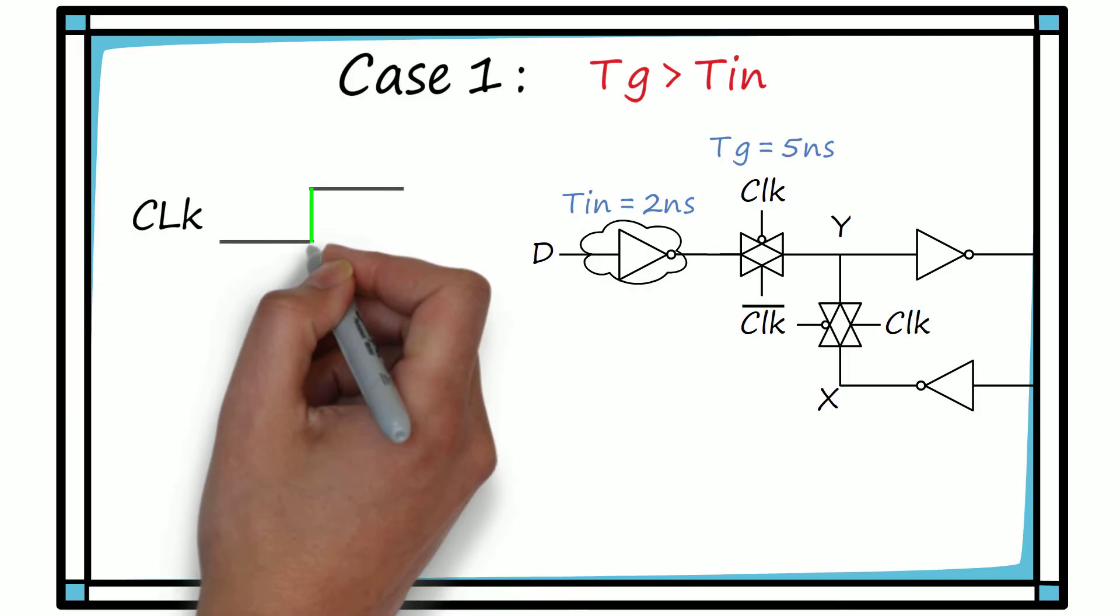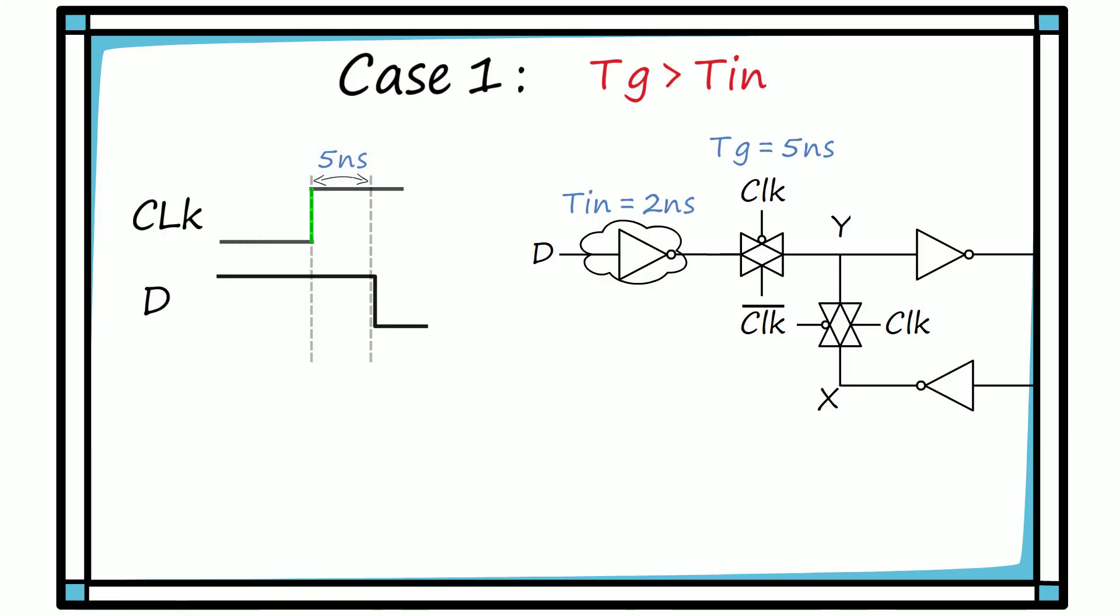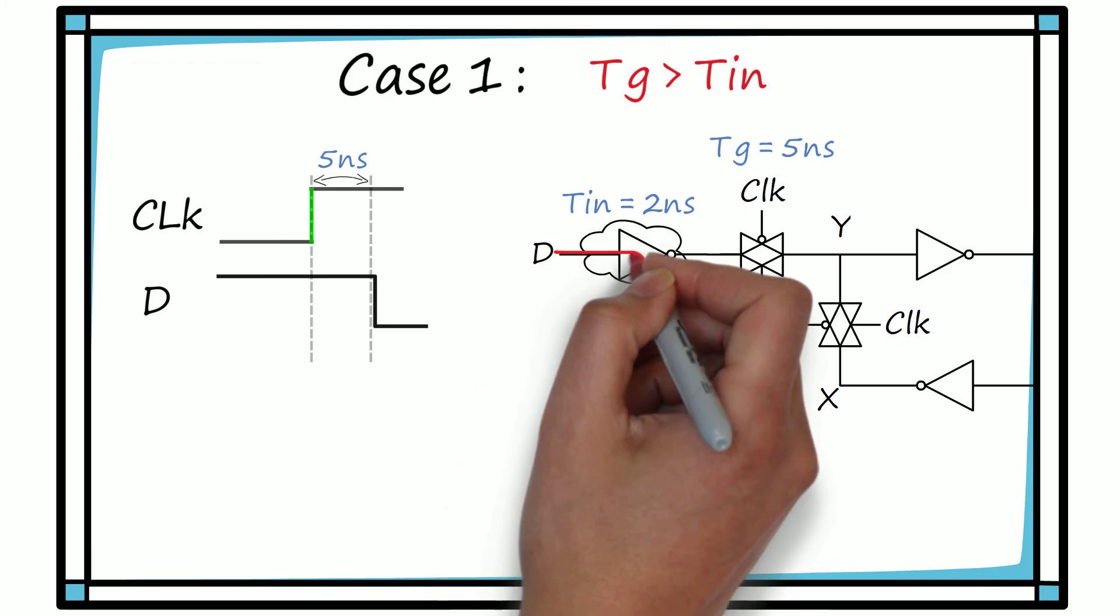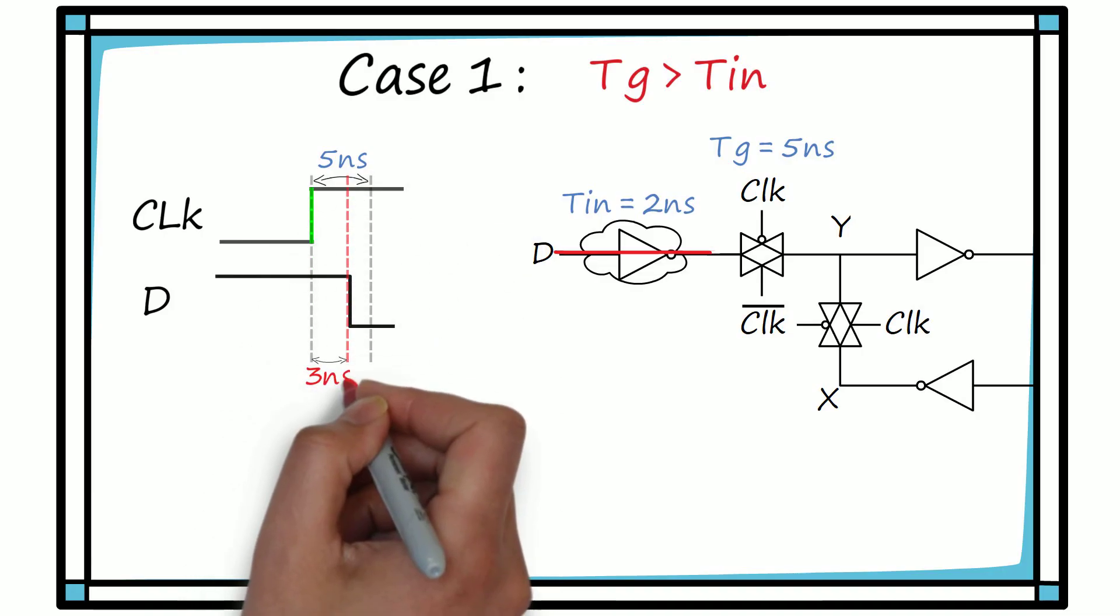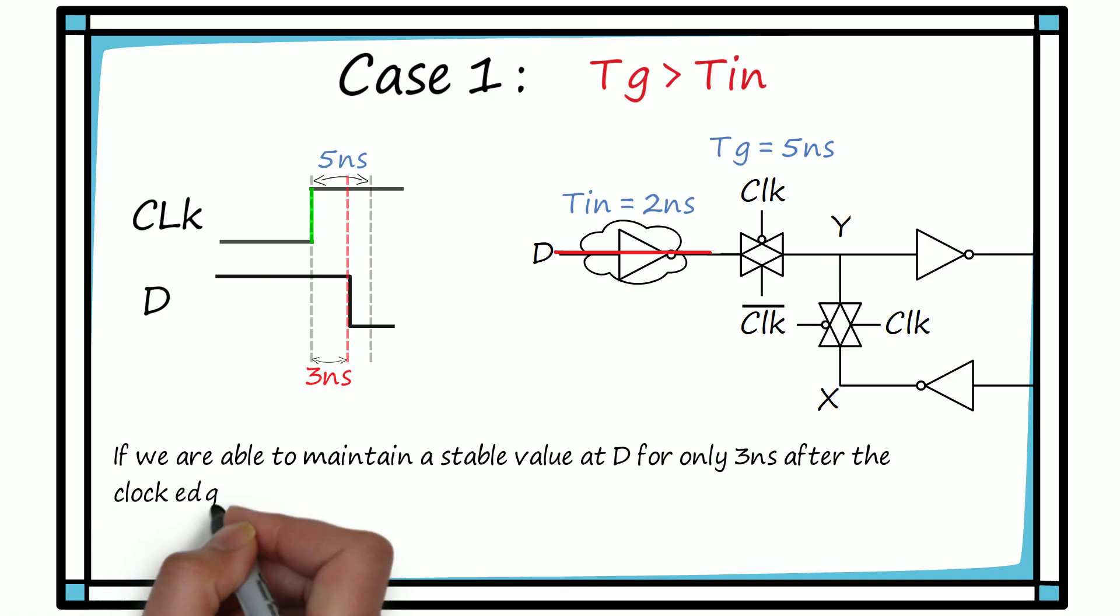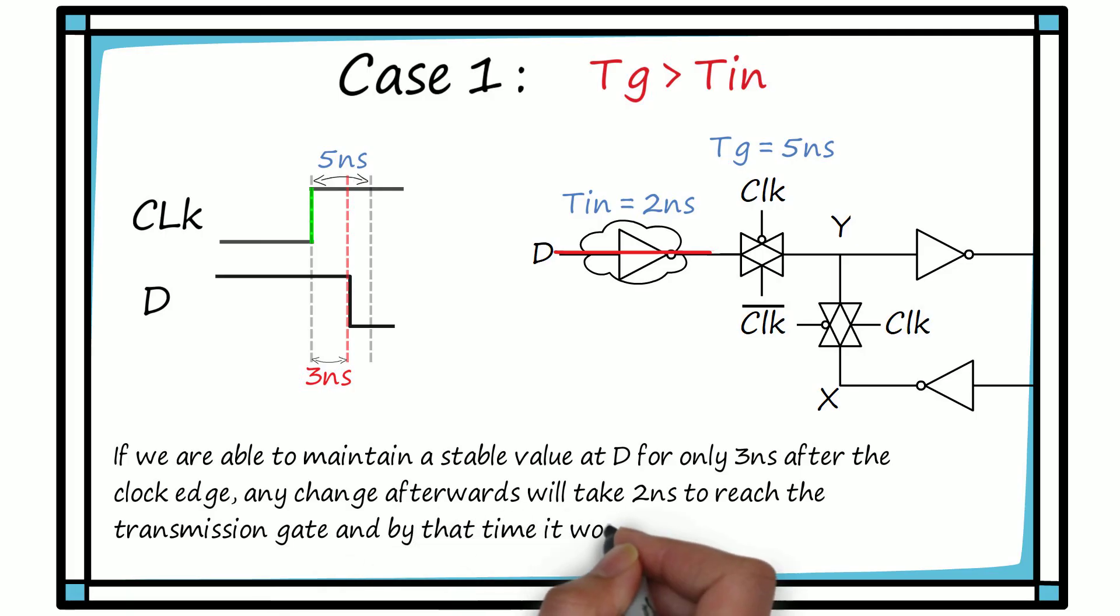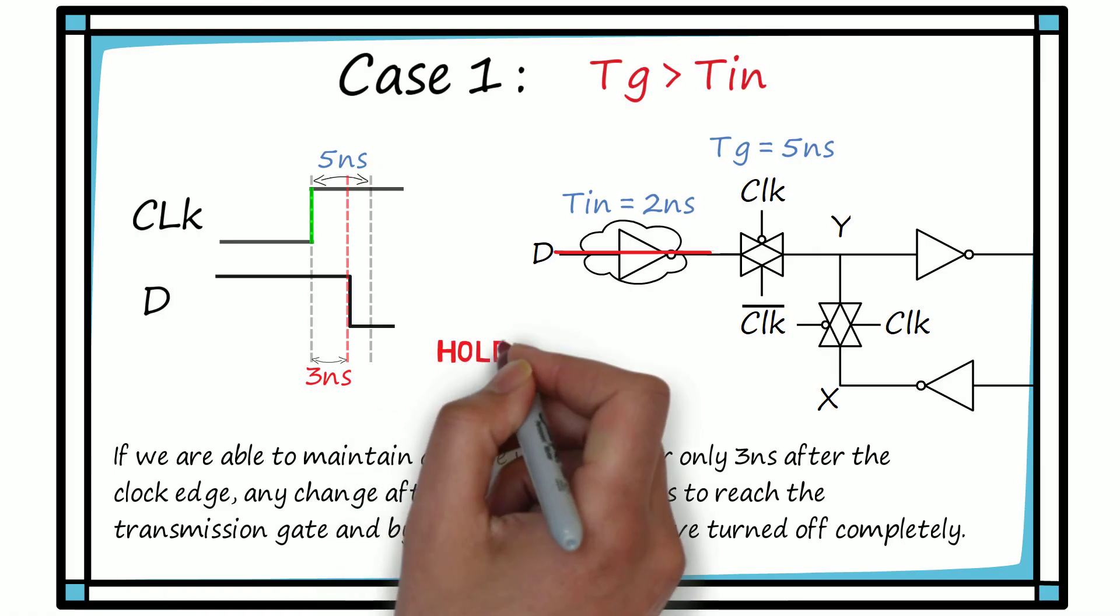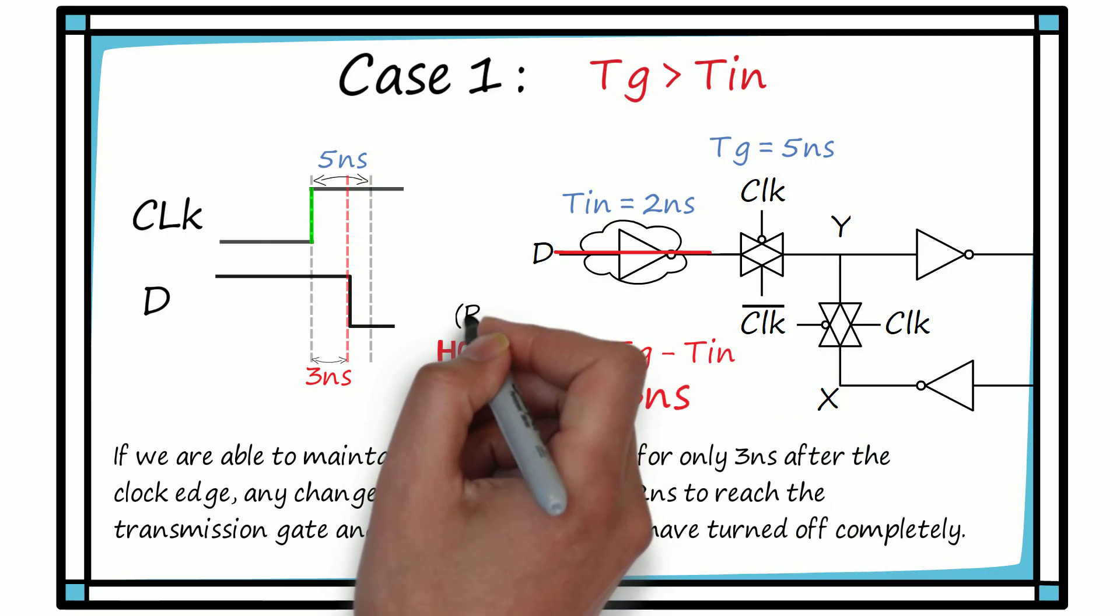Upon the clock's active edge arrival, the transmission gate would have made the data wait for 5 ns if there was no data path delay. However, due to the presence of data path delay, 2 ns will be gone in transit from D to the transmission gate input. Hence, the waiting time at D is reduced to only 3 ns. Now, if we are able to maintain a stable value at D for only 3 ns after the clock edge, any change afterwards will take 2 ns to reach the transmission gate and by that time it would have turned off completely and our purpose is solved. Hence, our hold time comes out to be TG minus TIN which is equal to 3 ns here and it is positive in this case.